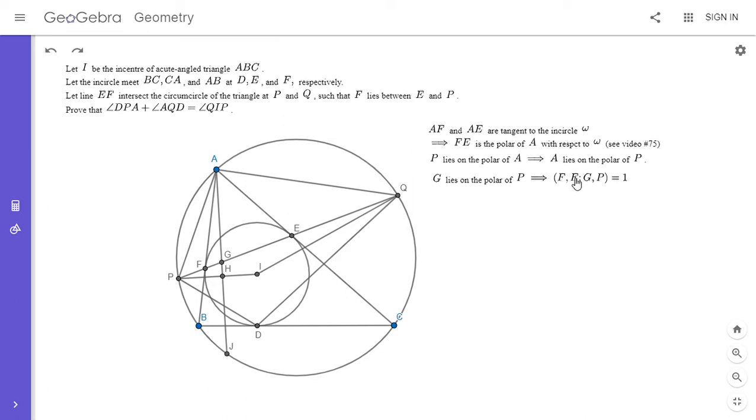And once we have a cross ratio equal to one, then we can do lots of projections, and that often helps make a lot of progress. So we have F, E, G, P. What's a good point to project those four points through? So we can project point A through each of those four points onto the circumcircle. And so that's what I'm going to do here. So if we project those four points through A onto the circumcircle, P stays at P, F goes to point B, G goes to point J, and E goes to point C. So that's pretty convenient.